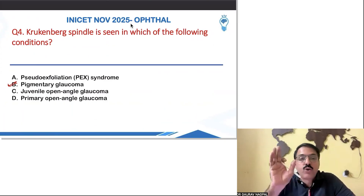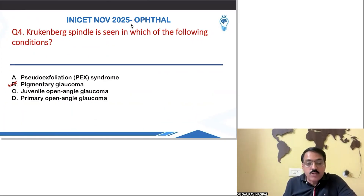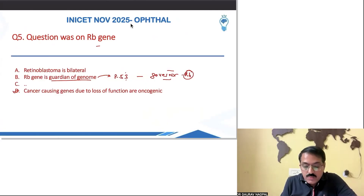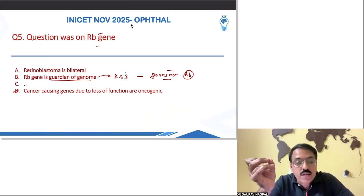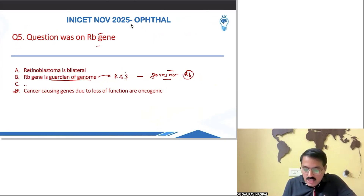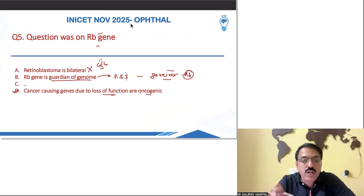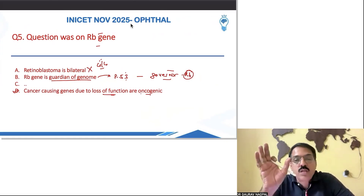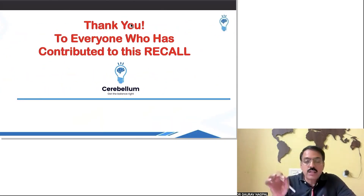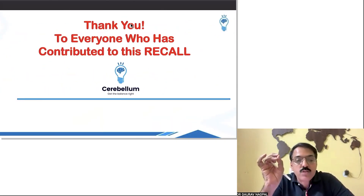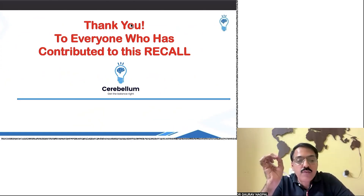Apart from these, there was a question on the retinoblastoma gene, which Dr. Spurser has already covered. This is a cancer-causing gene due to loss of function. The guardian of the genome is p53. Retinoblastoma is not always bilateral — it is mostly unilateral; in very few cases it is bilateral. So these are five questions I was able to track.